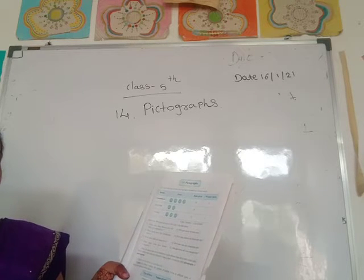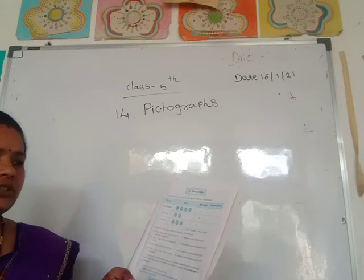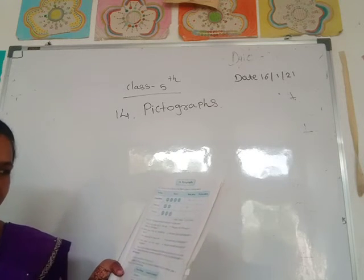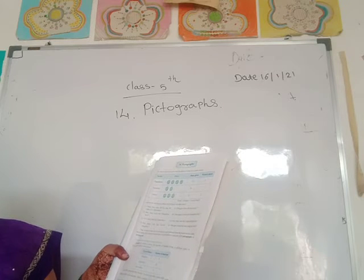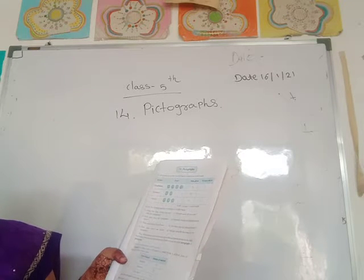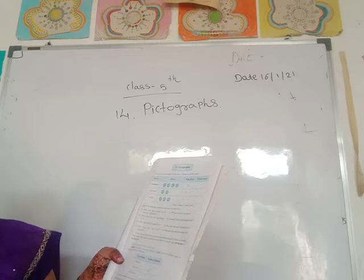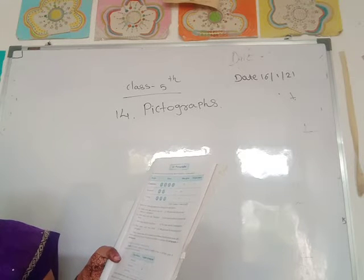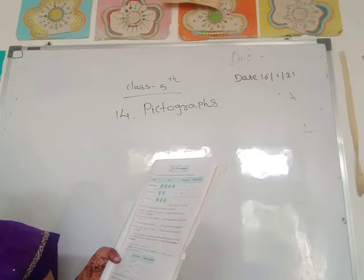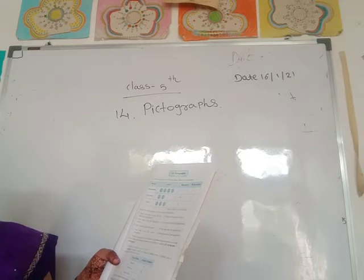Fourth question: how many wickets did Ramakant take? Ramakant took zero wickets. Fifth question: how many balls did Ahamad bowl? Three overs. One over means 6 balls, so 6 times 3 equals 18 balls.